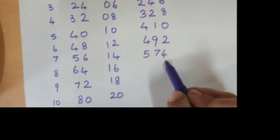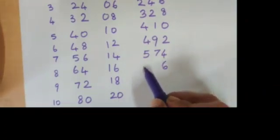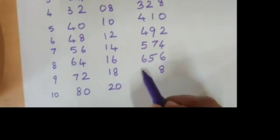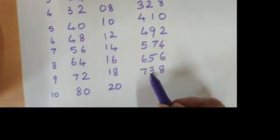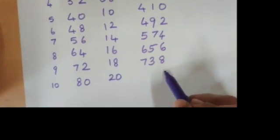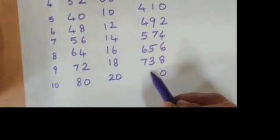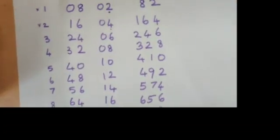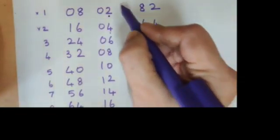We have 6 which is here, and it is 65, 656. And then you have 8 which is here, and it is 72 plus 1 is 73, 738. And you have 0 which is here, 80 plus 2 is 82, 820. This is your 82 times table.